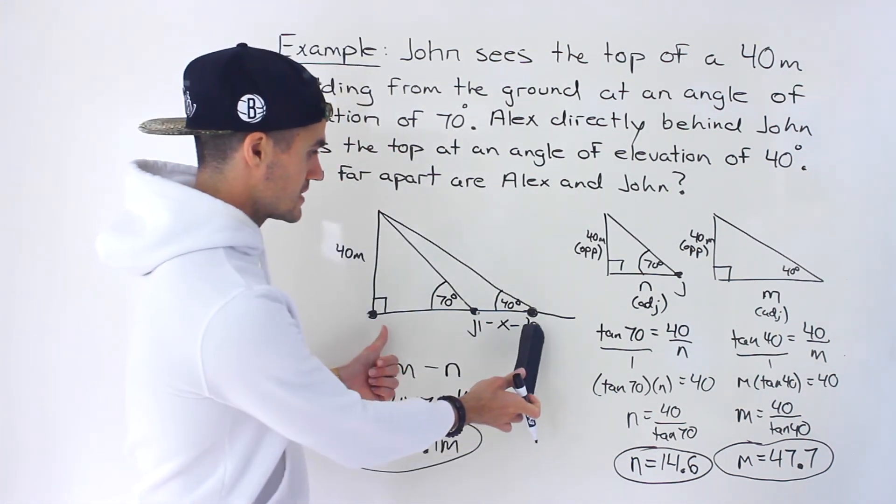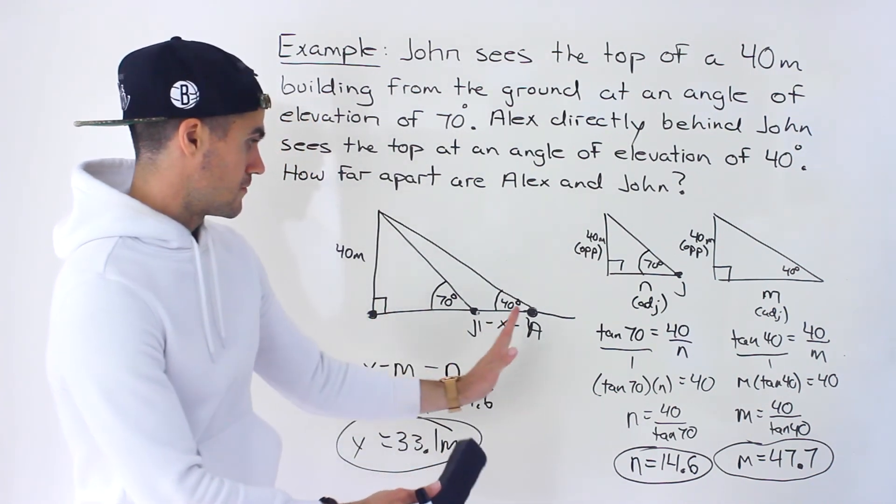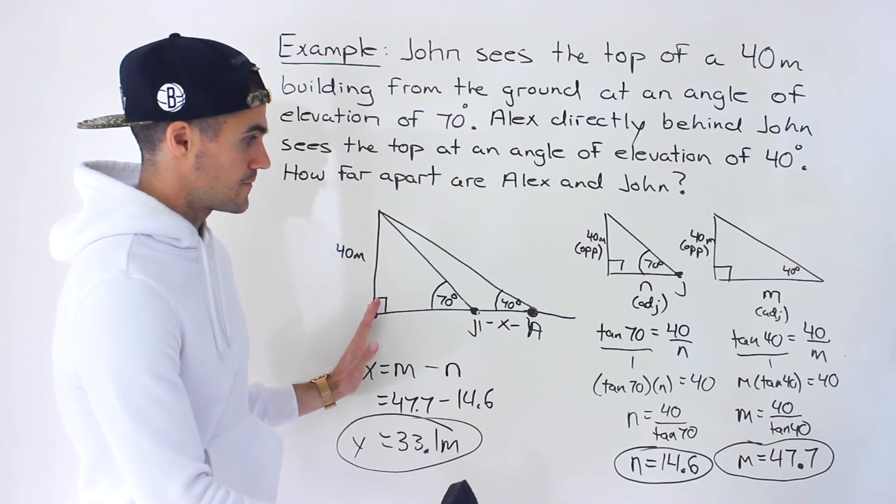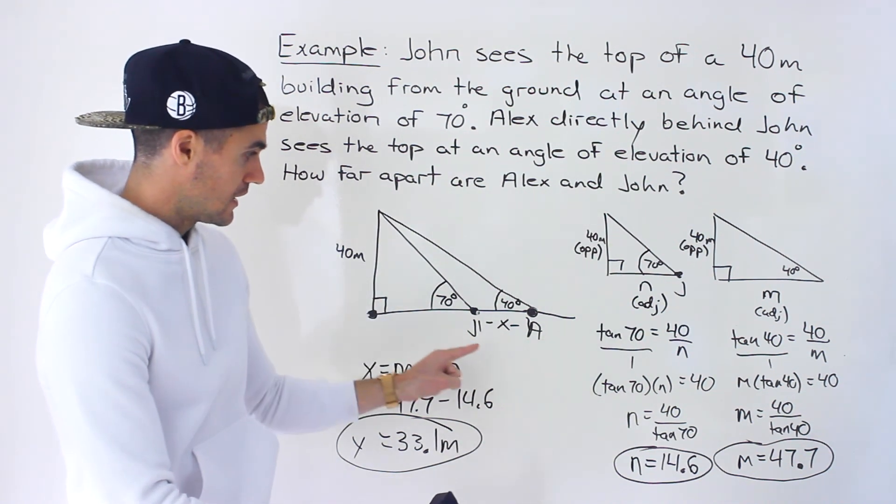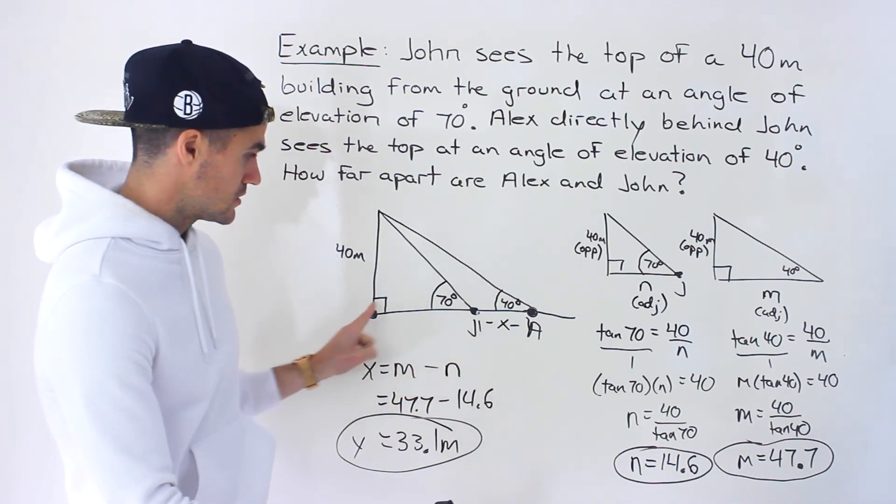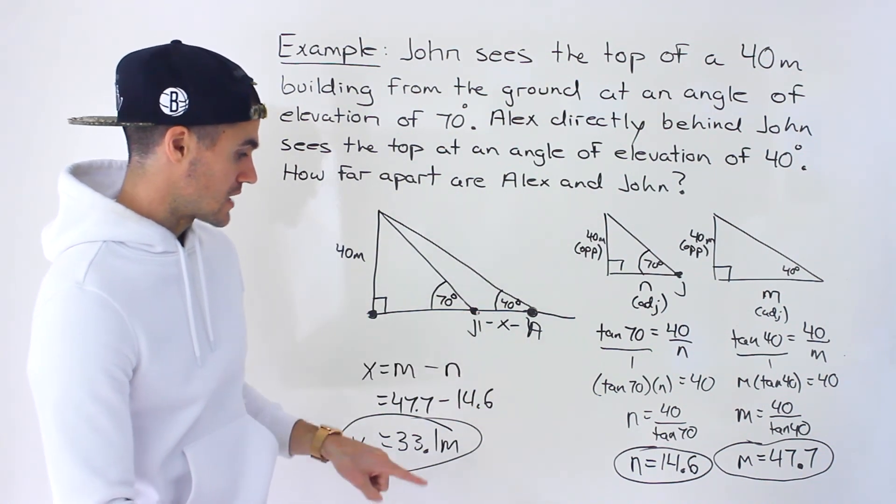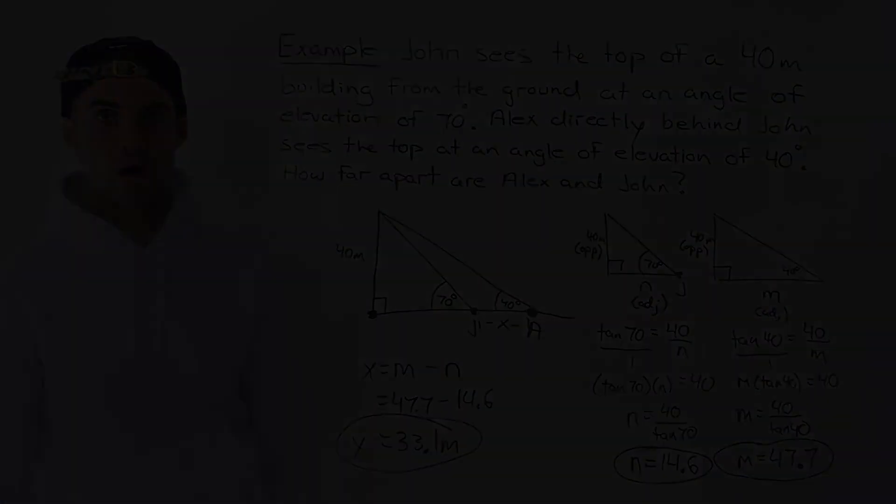So I first found the distance from Alex to the building, which was 47.7. Then I found the distance of John to the building, which is 14.6. Then the difference between those ended up being 33.1.